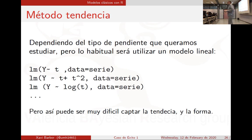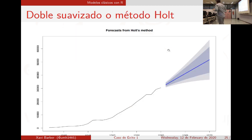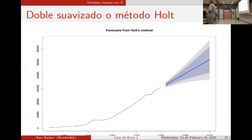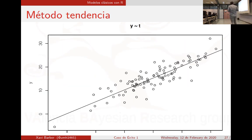¿Puedo analizarlo así con regresión? Sí. La predicción te va a dar una predicción según el polinomio que hayas puesto: si es solo T, una línea recta; T al cuadrado, una curva; exponencial o logarítmica, una curva distinta. Esto está en la serie y es un ajuste que habéis visto en econometría y en modelos lineales.